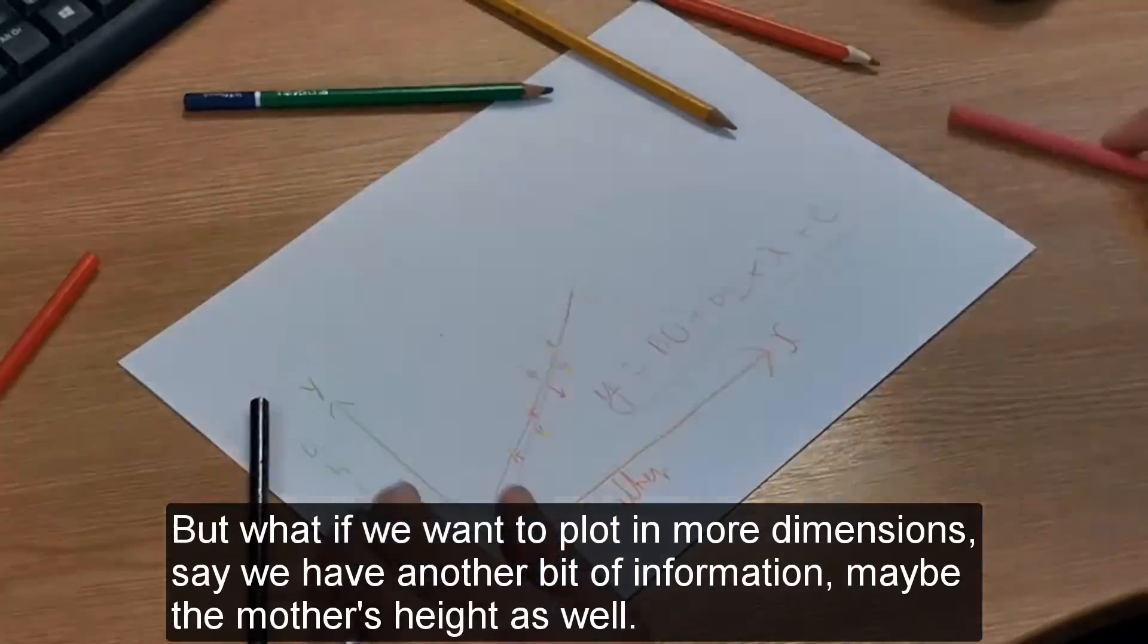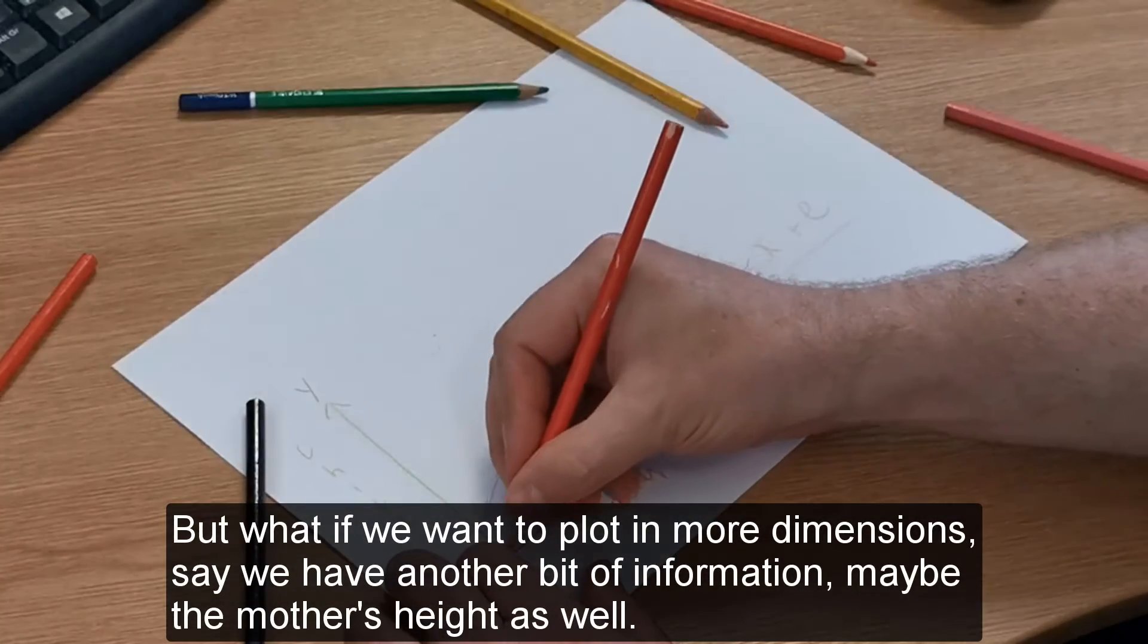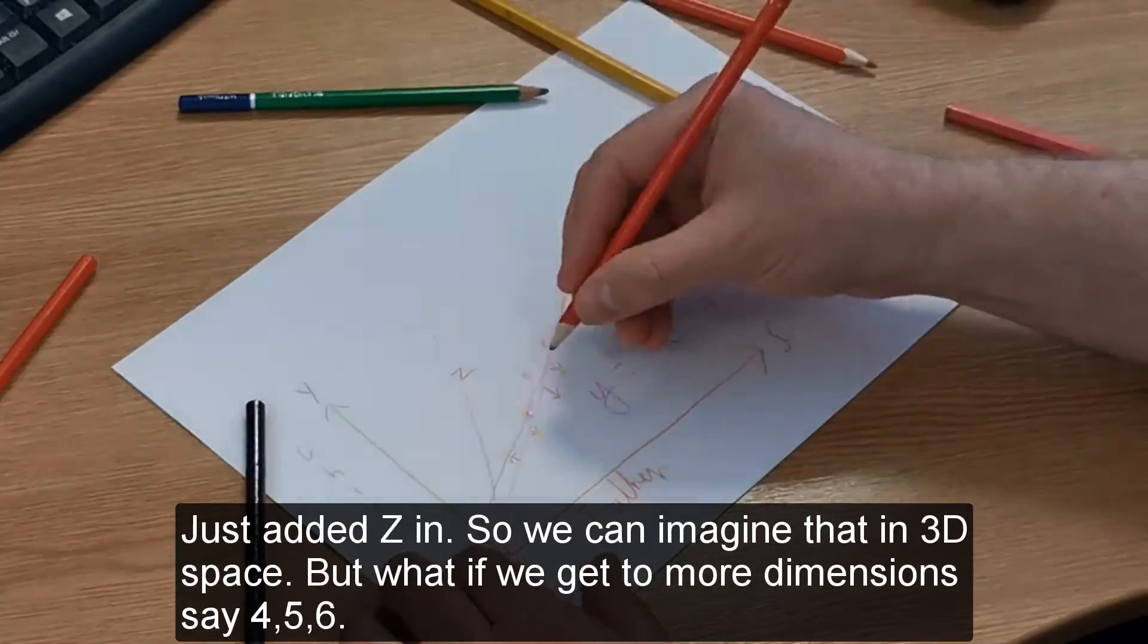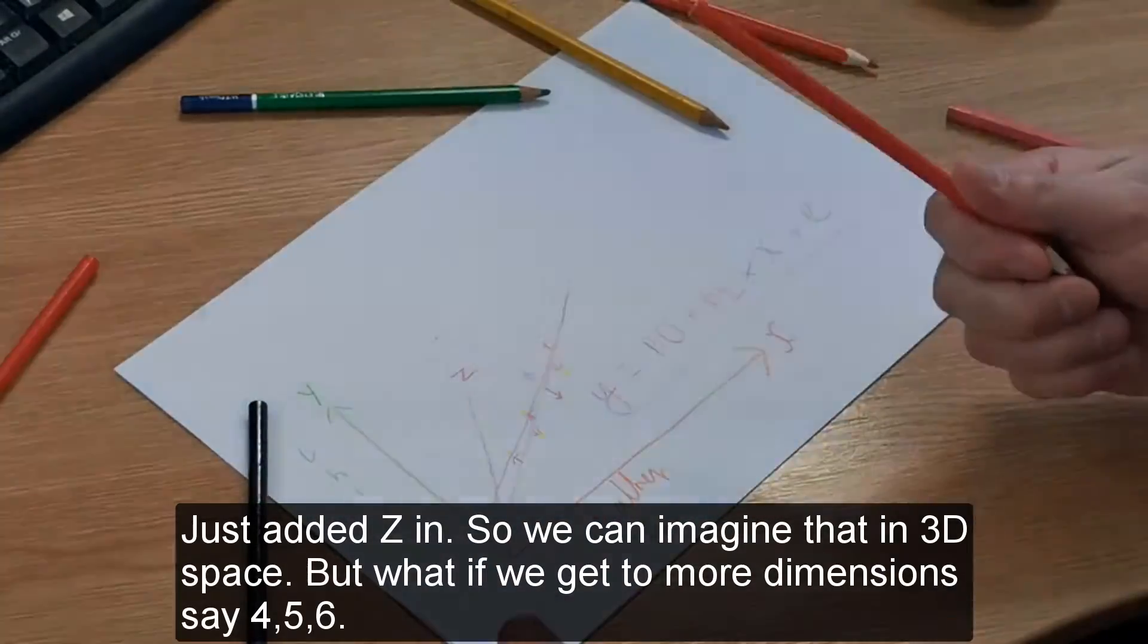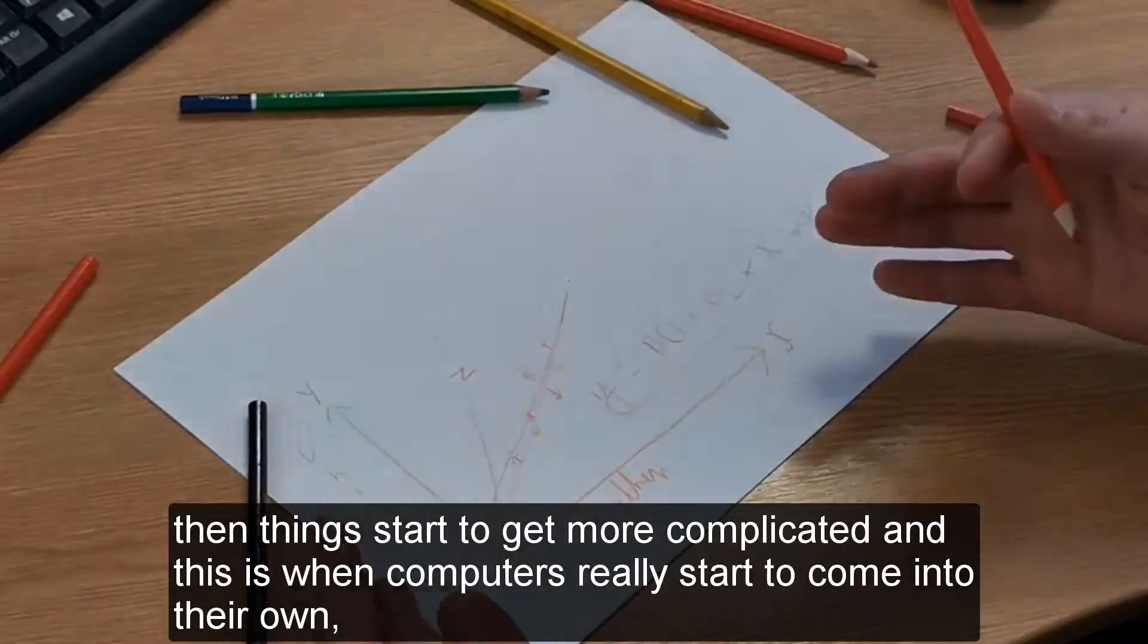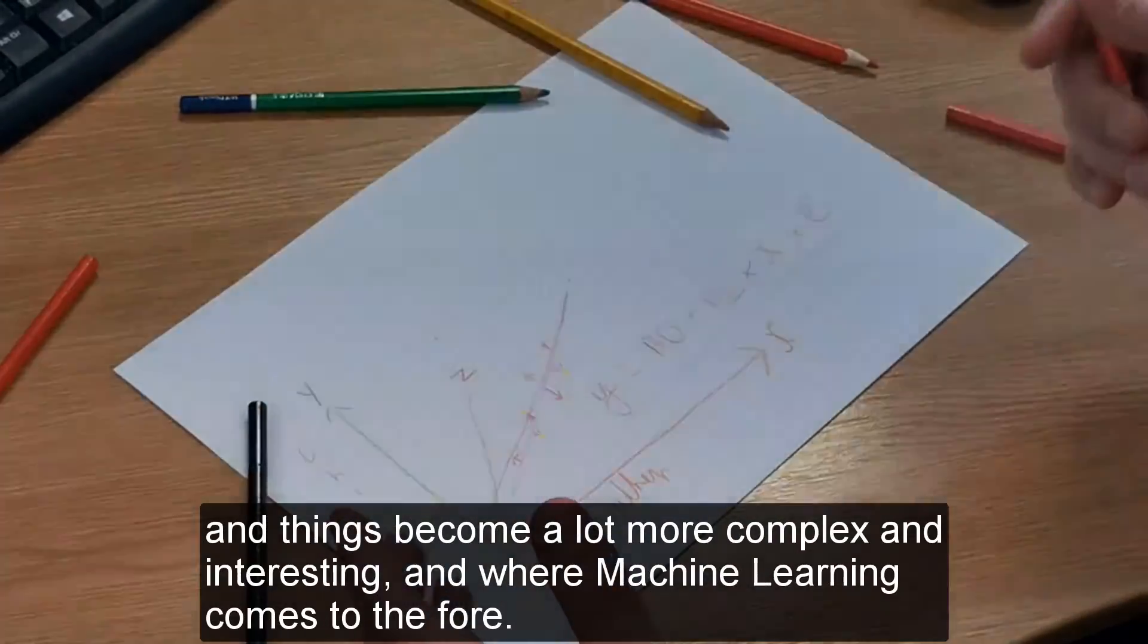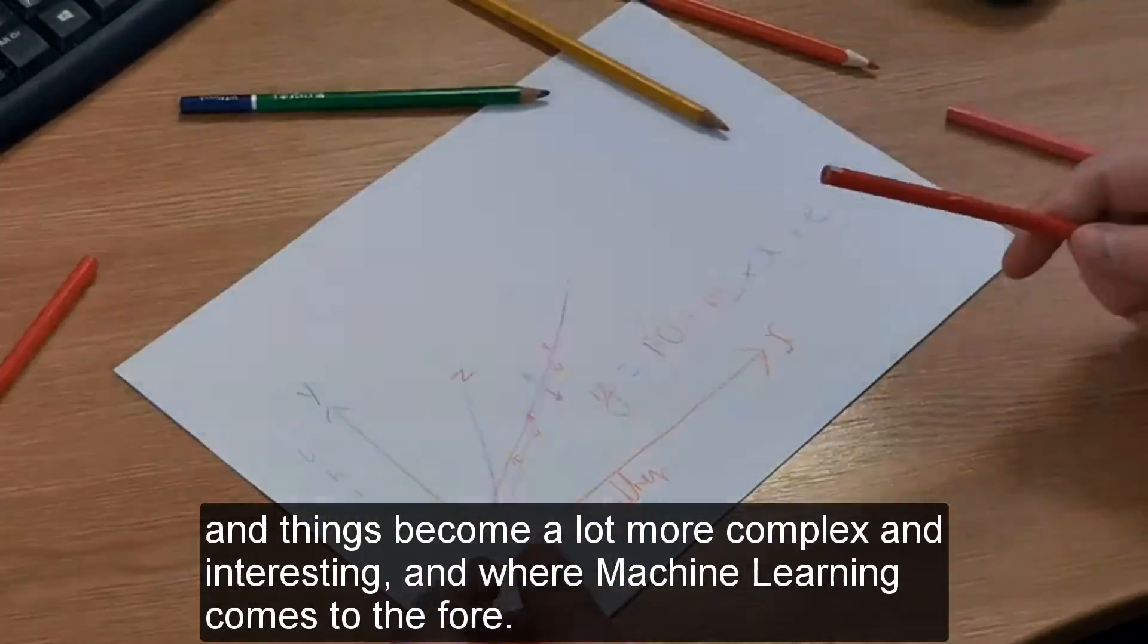But what if we want to plot in more dimensions? Say we have another bit of information, maybe the mother's height as well. We can imagine that in three-dimensional space. But what if we get to four, five, six dimensions? Then things start to get more complicated. This is when computers really come into their own—things become a lot more complex and interesting, and where machine learning really comes to the fore.